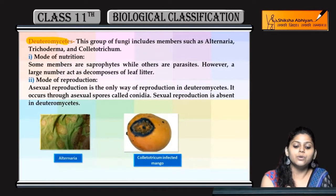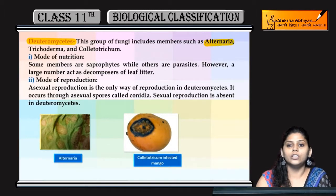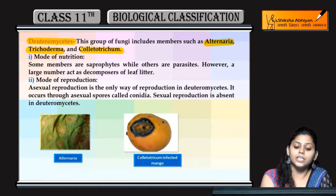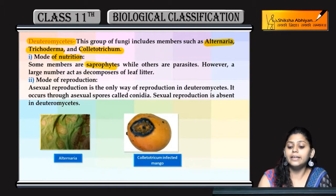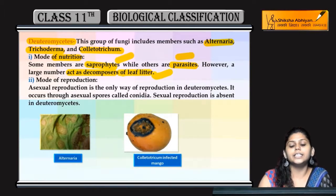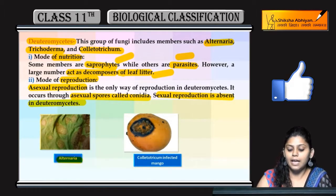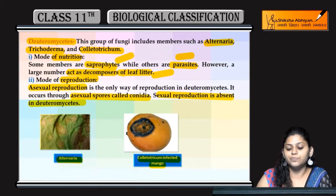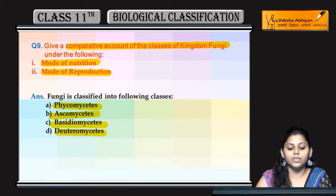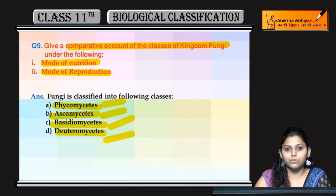Next hai Deuteromycetes. In ki mode of reproduction different from all others — kyunki ye sirf asexual reproduction hi show karte hain through asexual spores jinhe conidia bolte hain. Sexual reproduction is completely absent in Deuteromycetes. Examples: leaf-infecting Alternaria and Colletotrichum jo infected mango pe dekha ja sakta hai. To sab ke mode of nutrition aur reproduction mein: Phycomycetes, Ascomycetes, Basidiomycetes, aur Deuteromycetes — jin mein Deuteromycetes sirf asexual reproduction show karte hain.